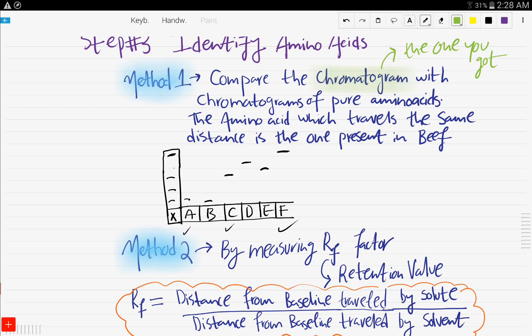Let's say there is amino acid A, B, C, and D in the lab. You'll have like a chromatogram of each amino acid and the amino acid which travels the same distance is the one present in the beef. So now that's A, B, C, D, and F. These are chromatograms of different pure amino acids that are available in the lab. And that's the one you got. So the one you got has A, obviously, B, no, it doesn't have, C, yes, the same level, D, no, E, no, F. So the beef contains A, C, and F. So you compared it with chromatograms of pure amino acids. And logically, the one which travels the same distance is the one present in our beef.